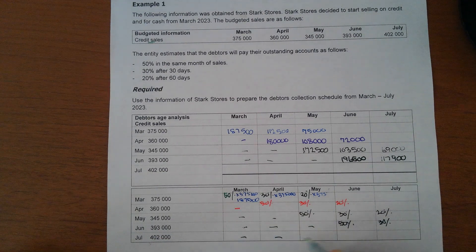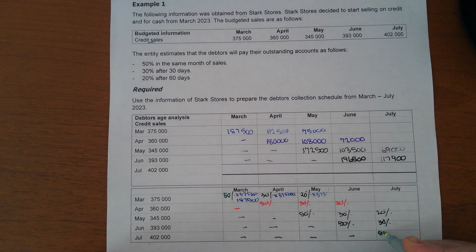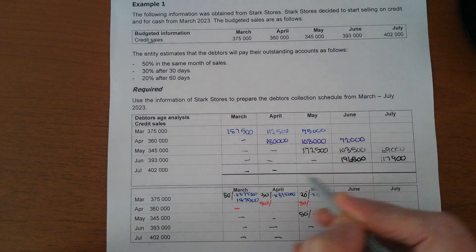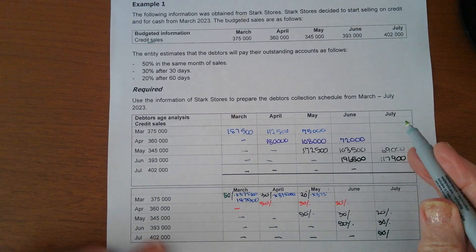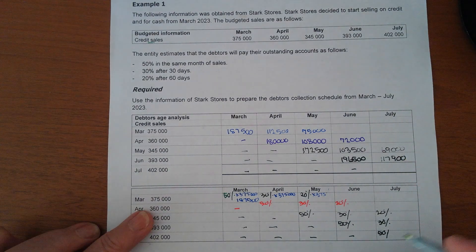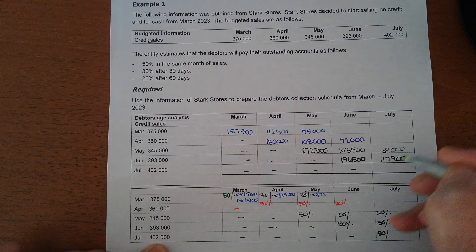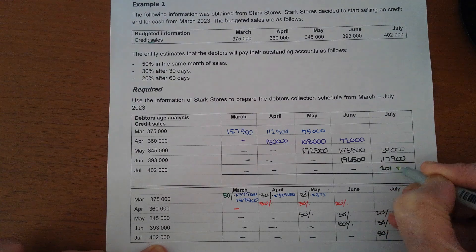For July sales, the first time that we will collect money for sales in July will be in July, and we will receive 50% of R402,000, which gives me R201,000.